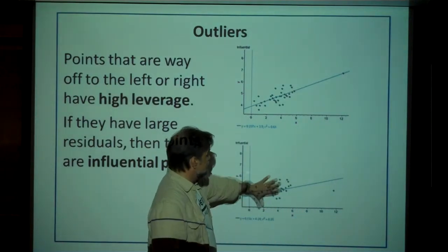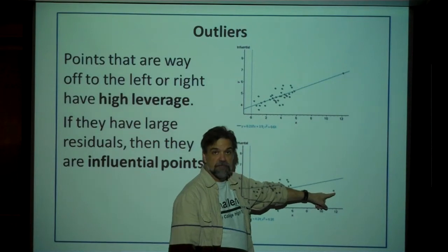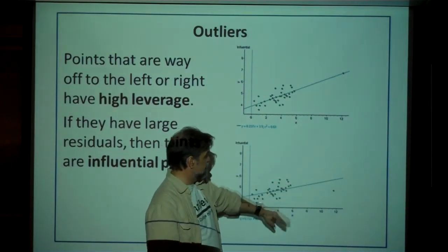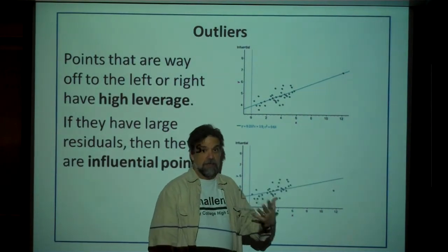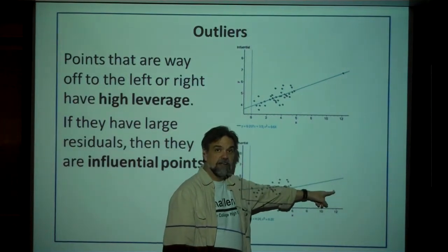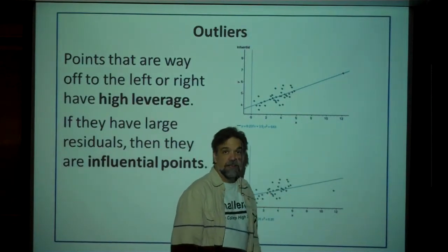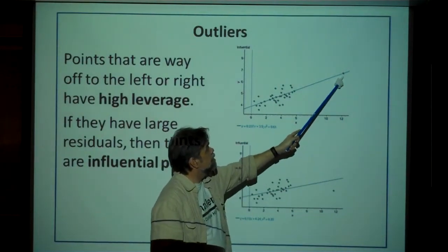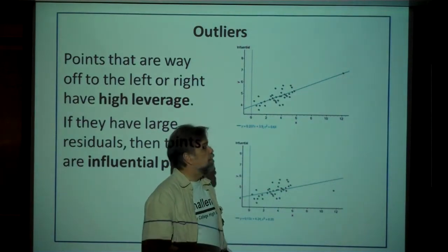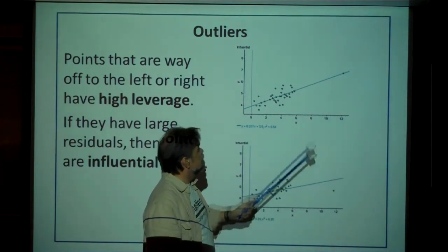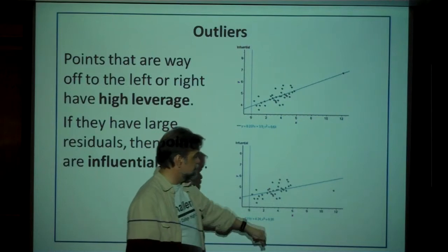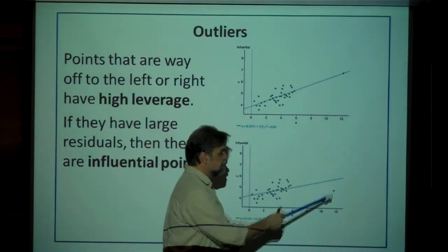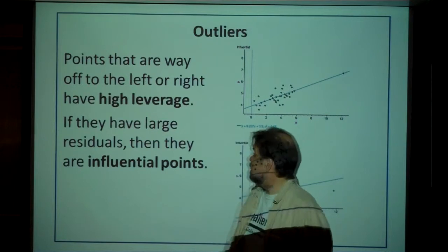Here's the same data, except now that point has been moved off the line. The line shifted quite a bit — if you were to remove that point, the line would go back, changing considerably. So that's an influential point with high leverage. If you were to remove the on-line high-leverage point, what would change quite a bit is r-squared: right now it's 61%, but if you removed it, it would be considerably lower — in this graph r-squared is 25%, and the only difference is that one data point.